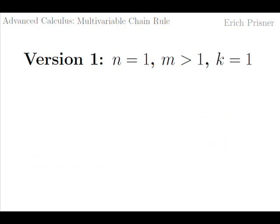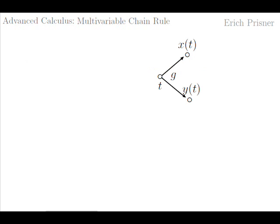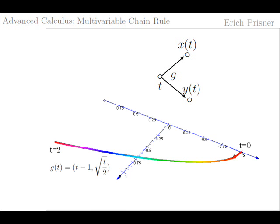Let's start with Version 1. For simplicity we only consider the case m equals 2; of course higher m's can be treated similarly. The function g has one input t and two outputs, x(t) and y(t) — in other words, it is a parametrized curve in the plane. x(t) and y(t) are our coordinates at time t. As an example, x(t) equals t minus 1 and y(t) equals the square root of t over 2, for t between 0 and 2.